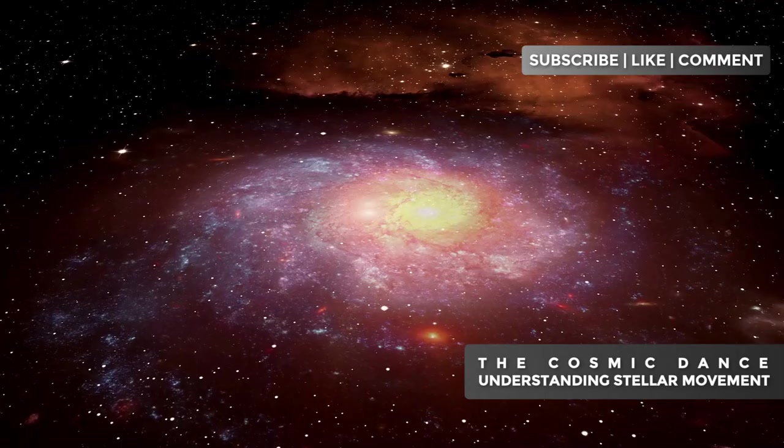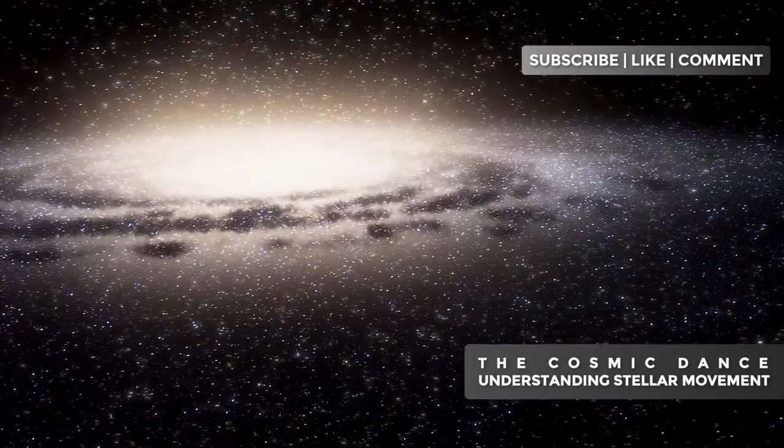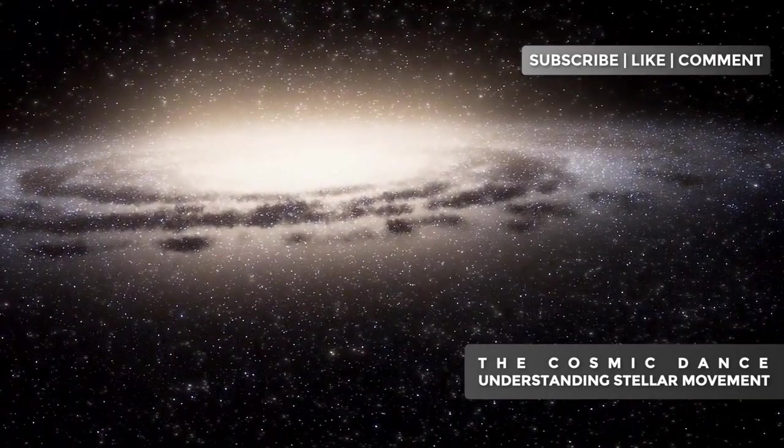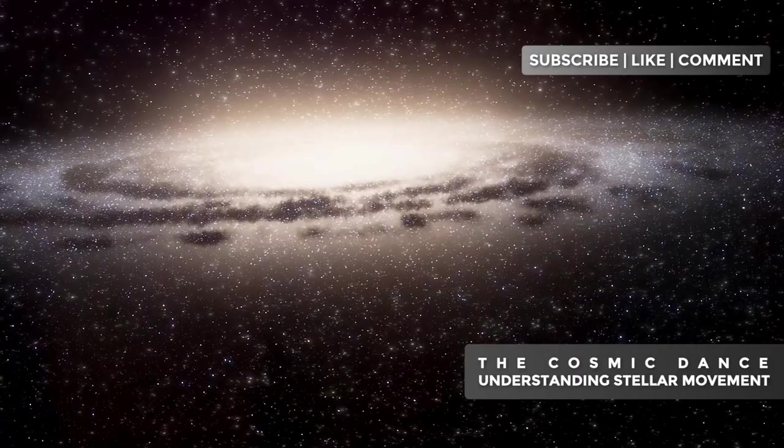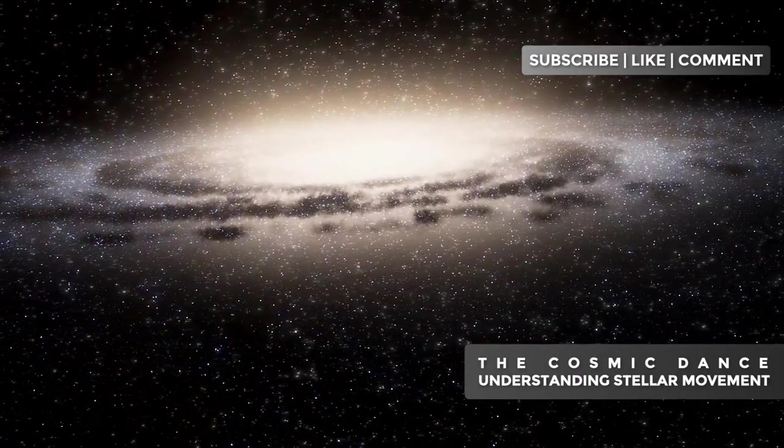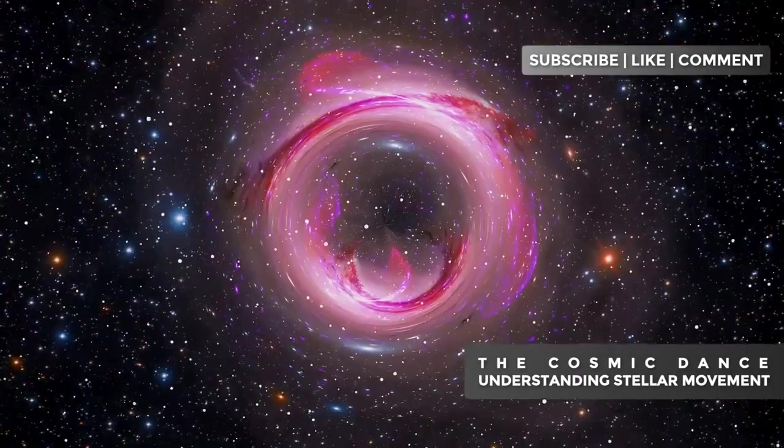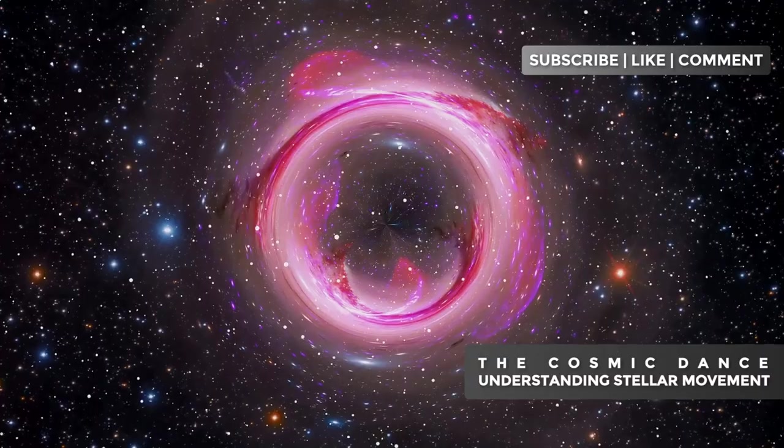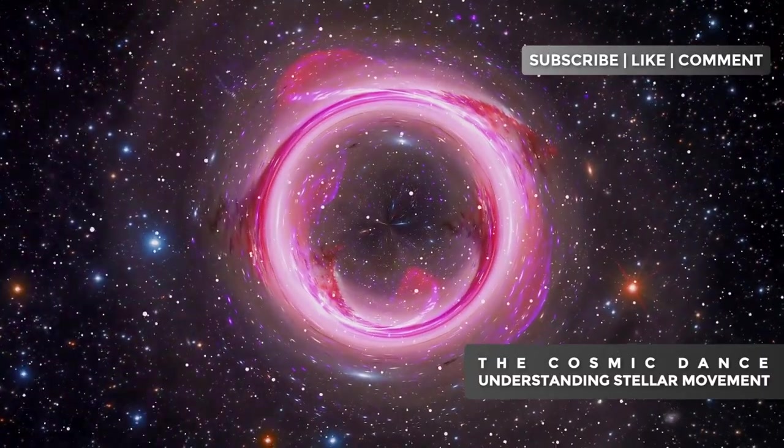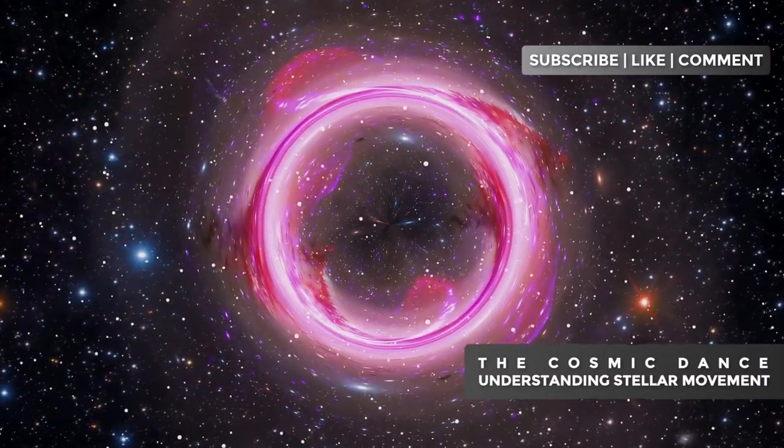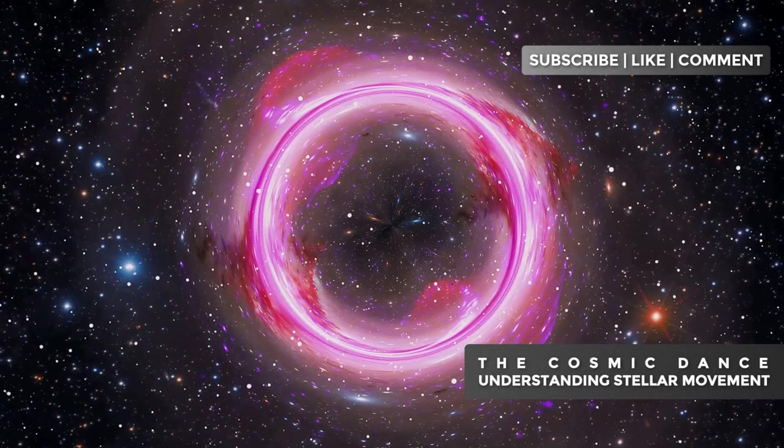Stars in the outer regions of the galaxy generally move more slowly. This phenomenon creates what we call the galactic rotation curve, a graph that relates the speed of stars to their distance from the galactic center. This curve is a crucial tool for astronomers to understand the mass distribution in our galaxy and, by extension, the nature of dark matter.